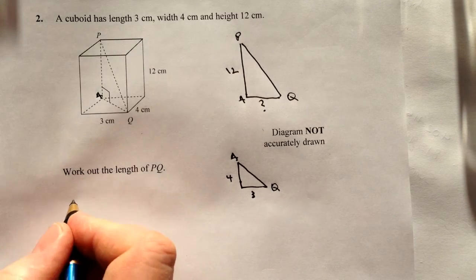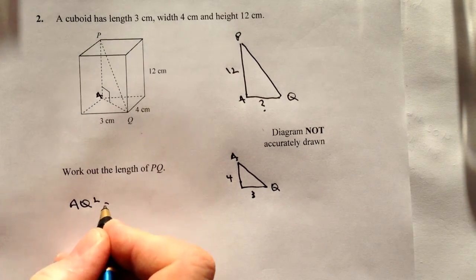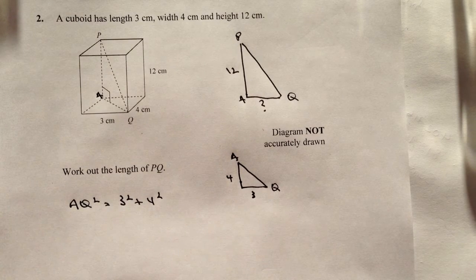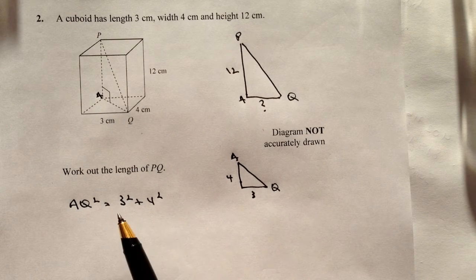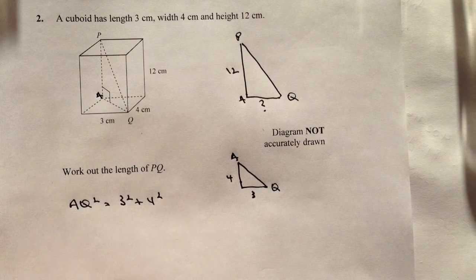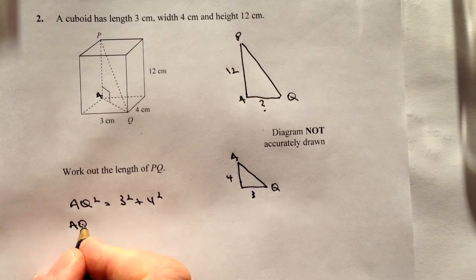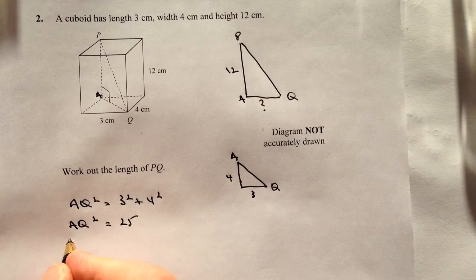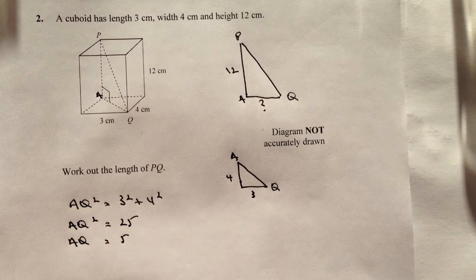Okay, so using Pythagoras, we've got AQ² = 3² + 4², and that's going to be 3² is 9 plus 4² is 16, so it means that AQ² = 25, or AQ = 5, because the square root of 25 is 5.